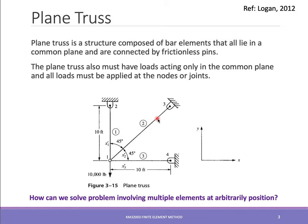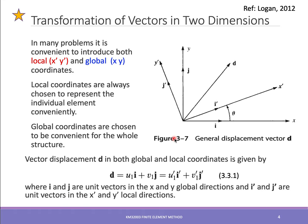So how can we solve problems involving multiple elements at arbitrary positions? Previously, we derived a bar element in only one direction. Now we have two axes and bars may lie in any direction. One way to handle this is to transform everything into the same coordinate system so we can perform the required summations and subtractions.